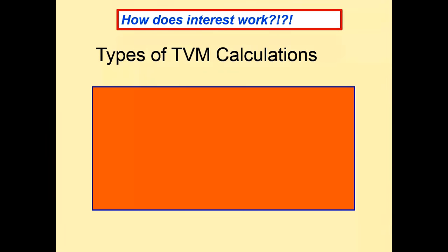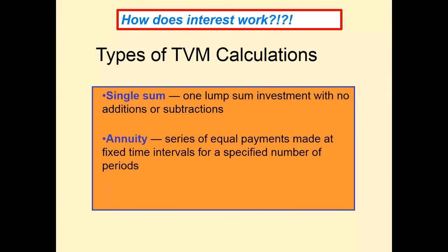For financial calculations involving interest, there are two frameworks. The first is a single sum investment — you make one lump sum investment at some point and cash it out in the future, like putting money in a CD and withdrawing it a year later. An annuity investment involves making level payments into an account over time, such as saving $100 a month into a money market savings account to accumulate a down payment in two years.